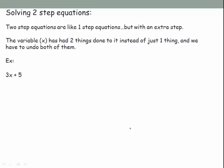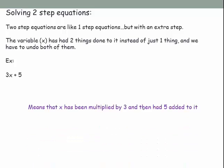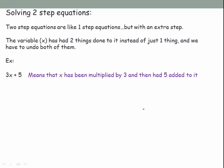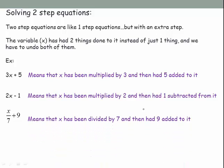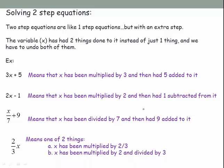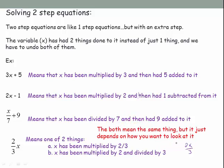For example, 3x plus 5 means x was multiplied by 3 and then 5 was added. 2x minus 1 means x was multiplied by 2 then had 1 subtracted. x over 7 plus 9 means x was divided by 7 then had 9 added. And two-thirds x can mean either x was multiplied by two-thirds, or x was multiplied by 2 and then divided by 3 — both forms are equivalent.